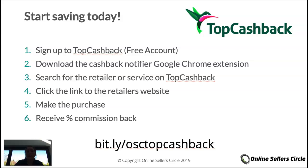You can search for the retailer you want under the search bar on your TopCashback account — simply add the retailer's name, like Boots or Tesco's, see what the percentage is, and click the link to go through to their website. Then it's over to you to browse and scan for the products you want to purchase, just like you normally would, and process the transaction at checkout using PayPal or your credit or debit card.